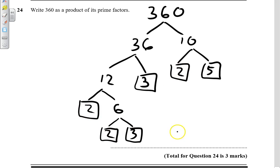So we've got 1, 2, 3 2's. So 2 to the power of 3 times by 1, 2, 3's and a 5. So it's 2 cubed times 3 squared times 5.